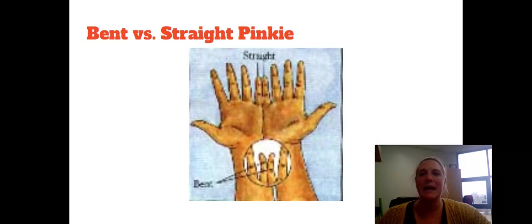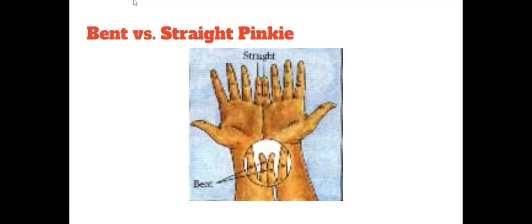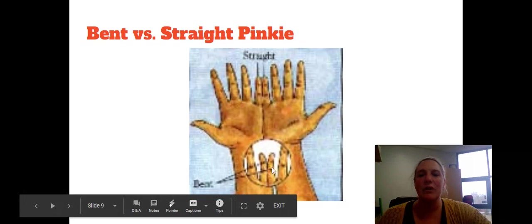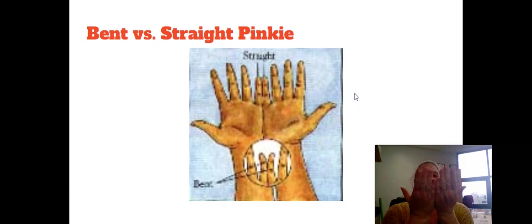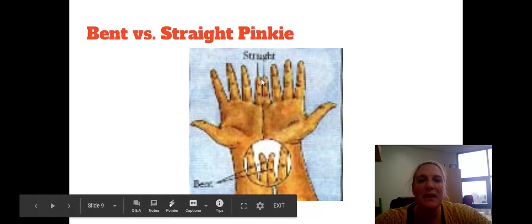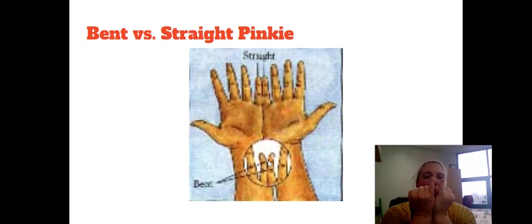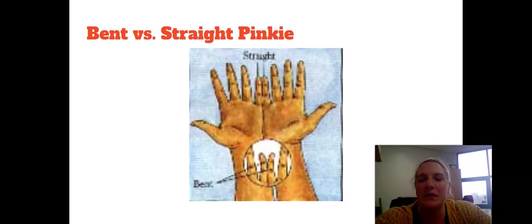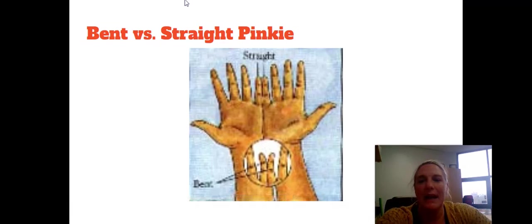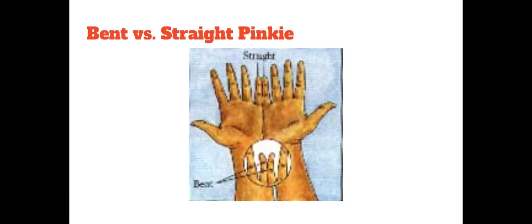The next one is bent little finger versus straight. We're looking at your pinkies. Take your hands, put them together, drop them, and just look at your pinky fingers. Look specifically at the very tips. They're either going to be fairly straight, or they're going to kind of flare out. Some people's flare out a lot, some have a slight flare. Determine if yours are bent or straight, and put that information down — bent or straight little finger.